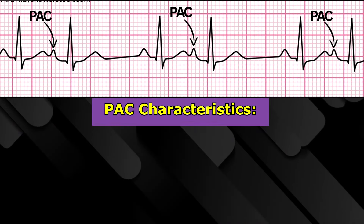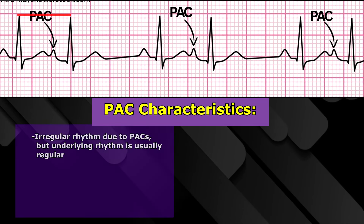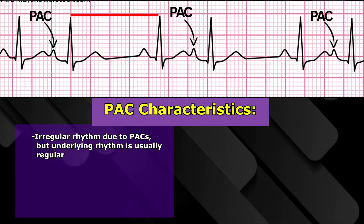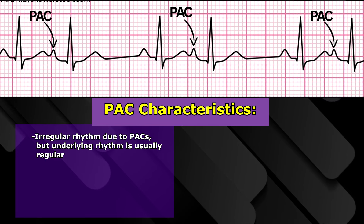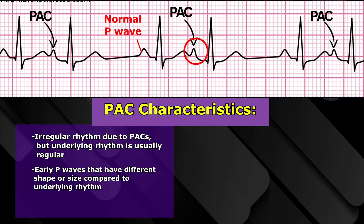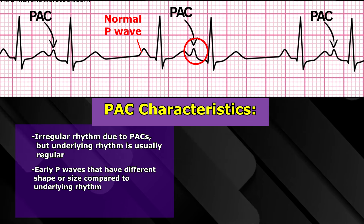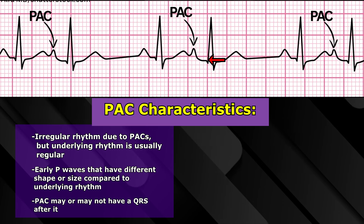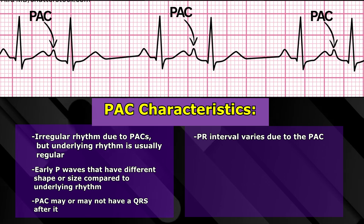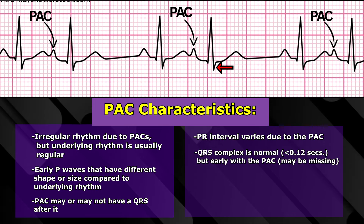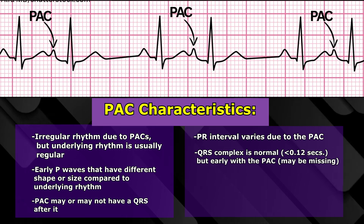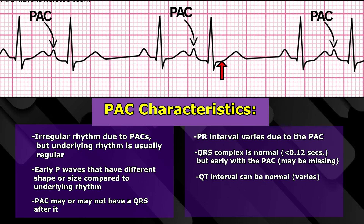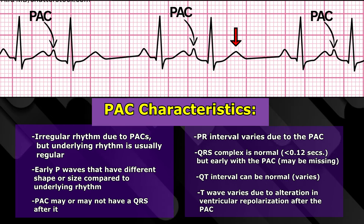What characteristics of PACs should you look for? There will be an irregular rhythm due to the PACs, though the underlying rhythm is usually regular. Early P waves will have different shapes and sizes compared to the underlying rhythm's P waves, and the PAC may or may not have a QRS after it. The PR interval varies due to the PAC. The QRS complex will be normal — less than 0.12 seconds — and early, or may be absent if the PAC is non-conducted. The QT interval can be normal but may vary, and the T wave varies due to altered ventricular repolarization after the PAC.